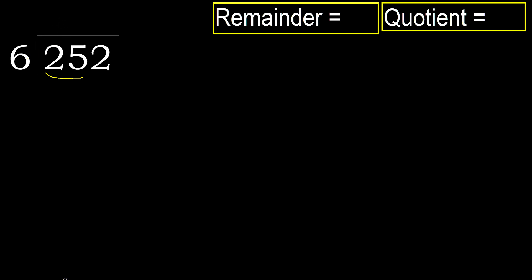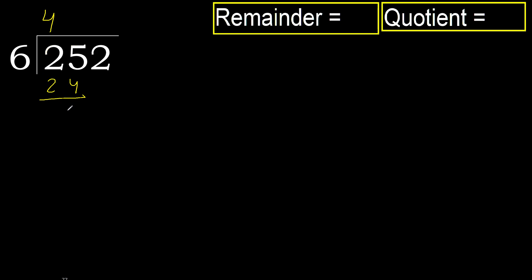6 multiplied by 5 is 30, which is greater. Multiply by 4: 24. 24 is not greater, ok. Subtract, next.